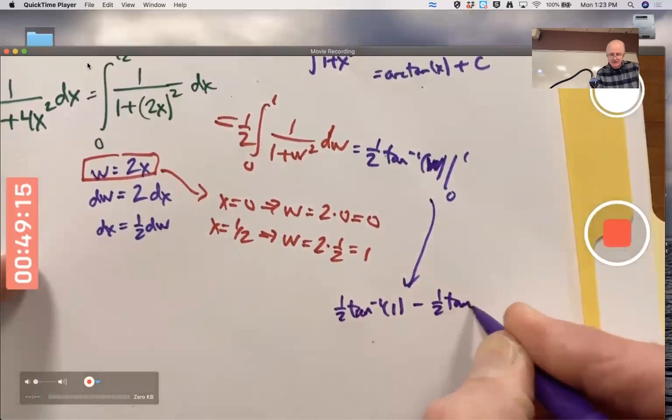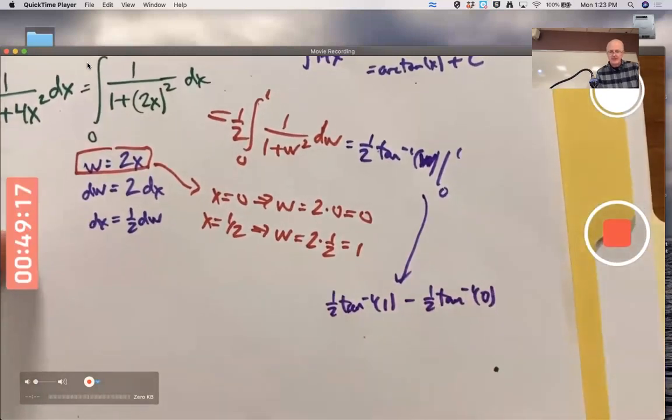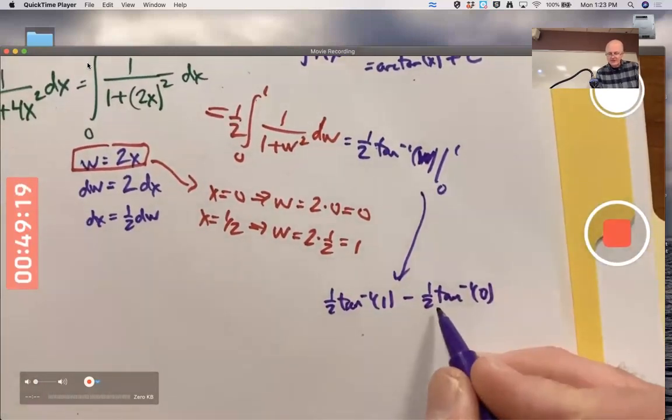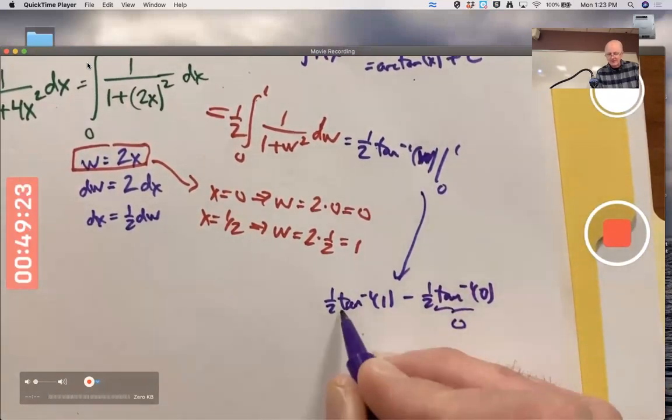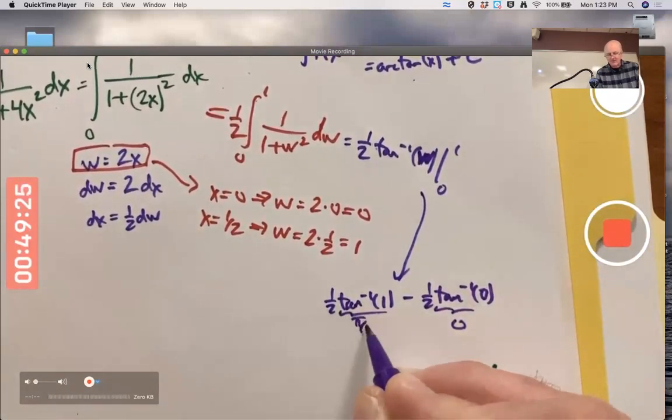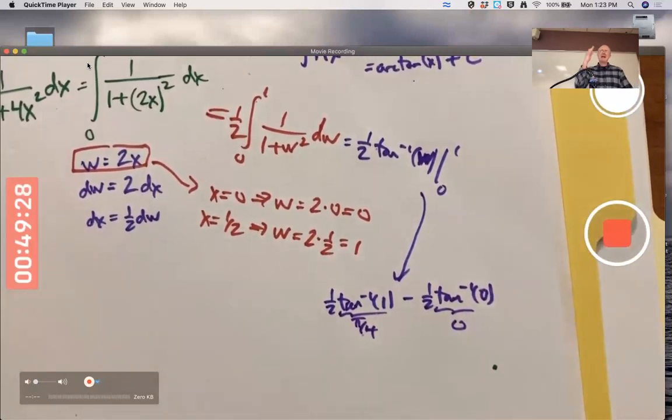This is going to be ½ inverse tangent of... w! Excuse me, I made the same mistake in the last class. w goes from 0 to 1, not 0 to ½. Sorry, I'm running out of space here.